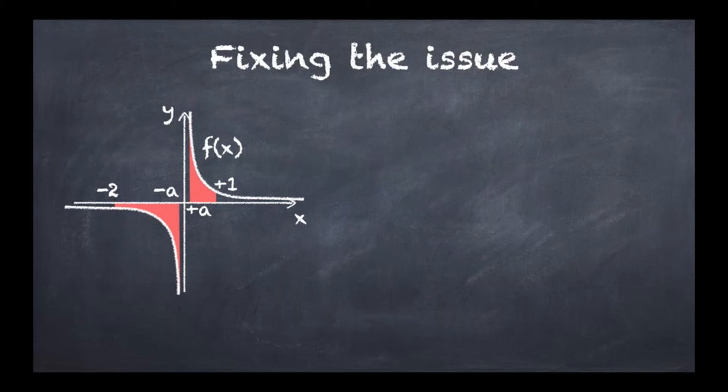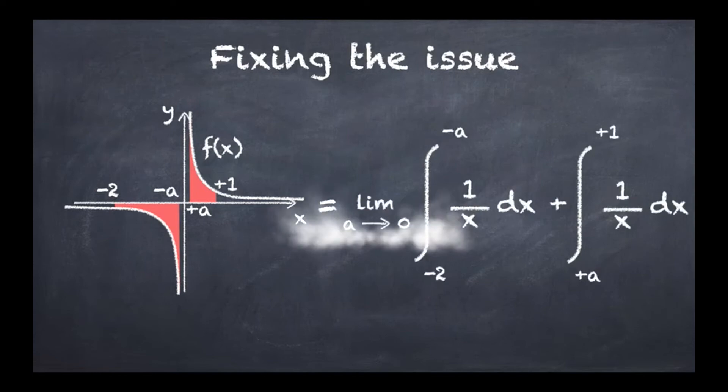As a result, we can try actually to add up these two areas. So that's going to look like this, and then try to see what happens when we take the limit when a tends to 0.